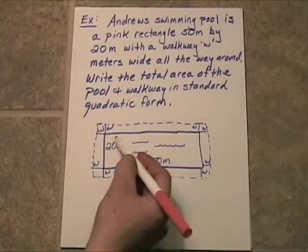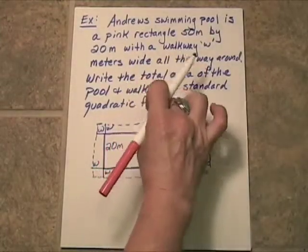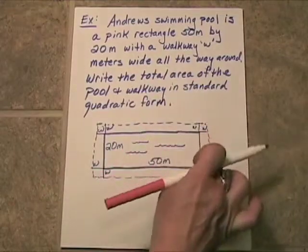Alright, so here's the pool and here's the walkway. Okay, and the walkway's width is the same the whole way around. It's w meters.